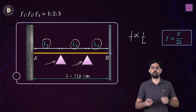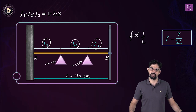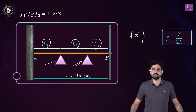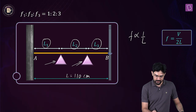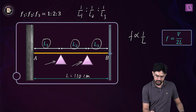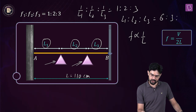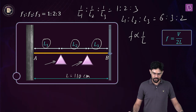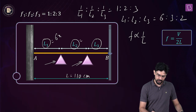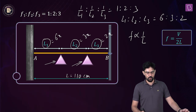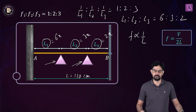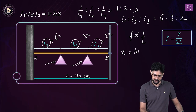Each segment acts as a wire fixed at both ends vibrating in the fundamental mode. Since frequency ratio is 1:2:3, we get 1/L1 : 1/L2 : 1/L3 = 1:2:3, which means L1:L2:L3 = 6:3:2. Let L1 = 6x, L2 = 3x, L3 = 2x. Then 6x + 3x + 2x = 11x = 110 cm, so x = 10 cm.